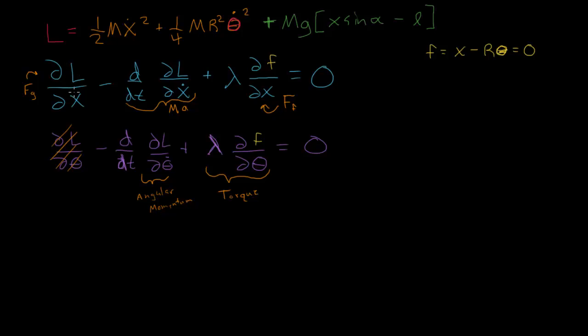First off, we'll do the partial of L with respect to x, and this is the only part that explicitly depends on x. So we'll take the derivative here and we'll get mg sine alpha. This part goes away, this part has x to the first power, so it goes away, and we're left with mg sine alpha.